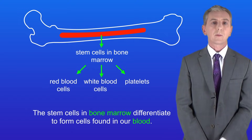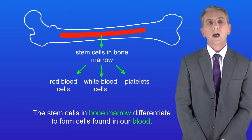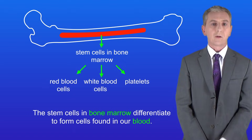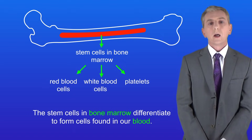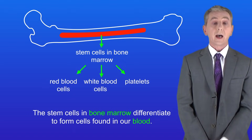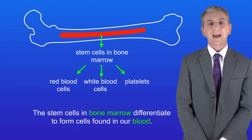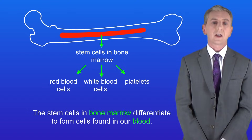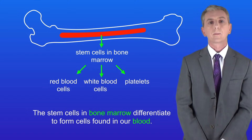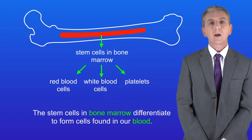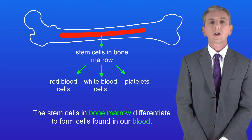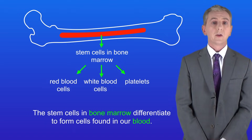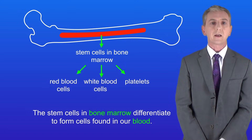We can also find stem cells in adult organisms, and a good example is in bone marrow. Unlike embryonic stem cells, adult stem cells cannot differentiate into any other type of cell. For example, bone marrow stem cells differentiate to form cells found in our blood, such as red blood cells, white blood cells, and platelets.